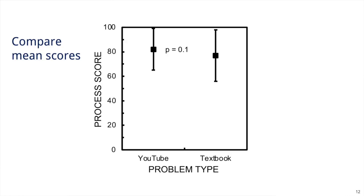One way which we have used PROCESS is to compare ratings when students solve YouTube problems versus when they solve textbook problems. For example, in a material energy balance course for chemical engineering students, we recorded slightly better problem solving for YouTube problems, and that could be because of the presence of videos in those problems or maybe the real world context present in those problems.